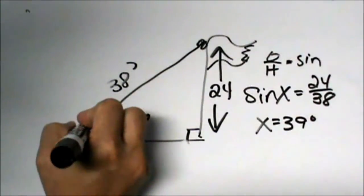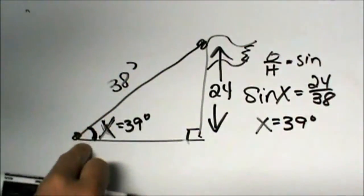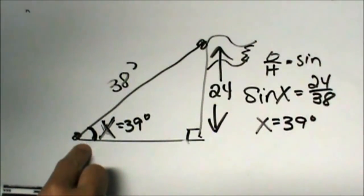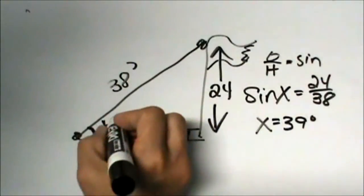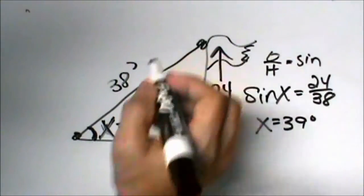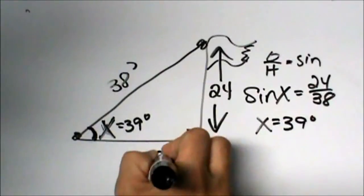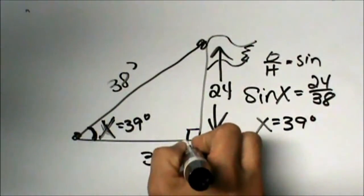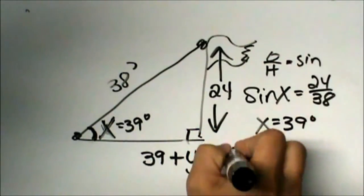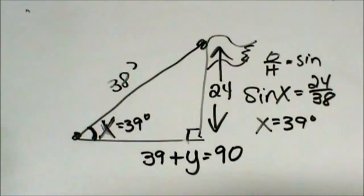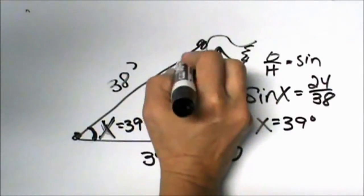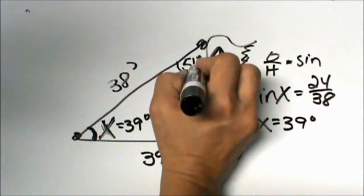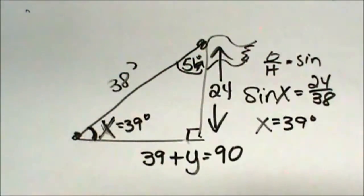We can stop there because that is what the question is asking for. What is the angle of elevation? If we needed to we could figure this angle out because what do we know? This angle, this acute angle and this acute angle have a sum of 90. So I'll call that angle y. So 90 minus 39 is 51. So this angle up here is 51 degrees if we did need to solve it. We didn't but I at least wanted to extend and go through that with you one more time.